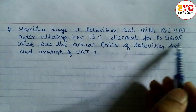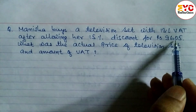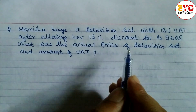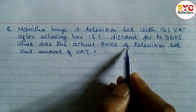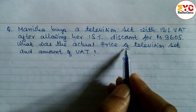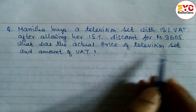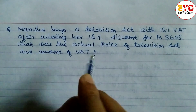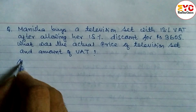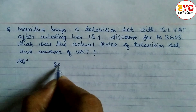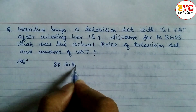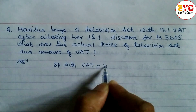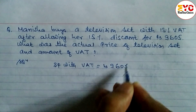13% VAT is given, 15% discount is given, and the price with VAT is Rs. 9605. We need to find the selling price — the actual price of the television — and the amount of VAT. SP with VAT is equal to Rs. 9605.